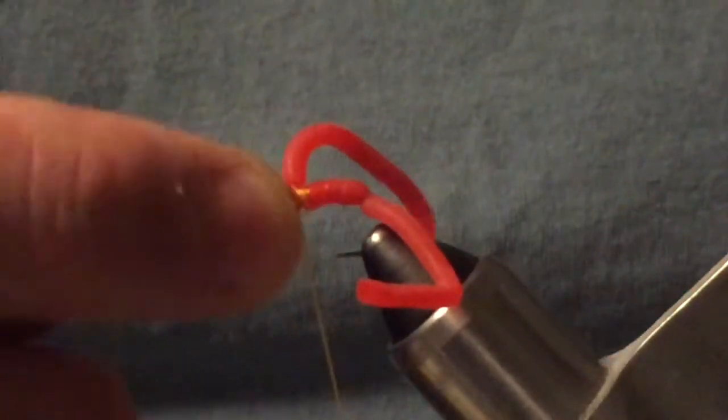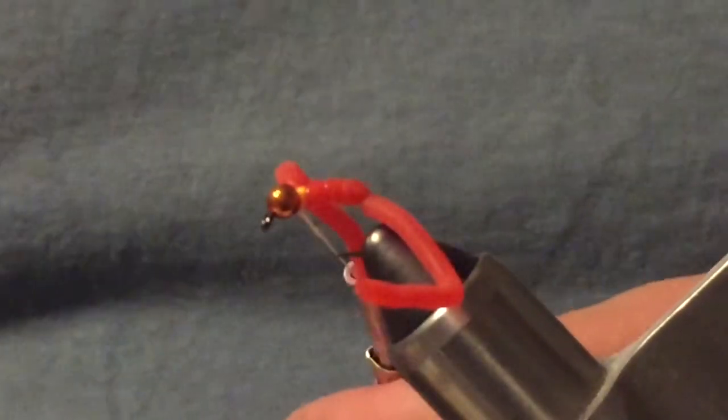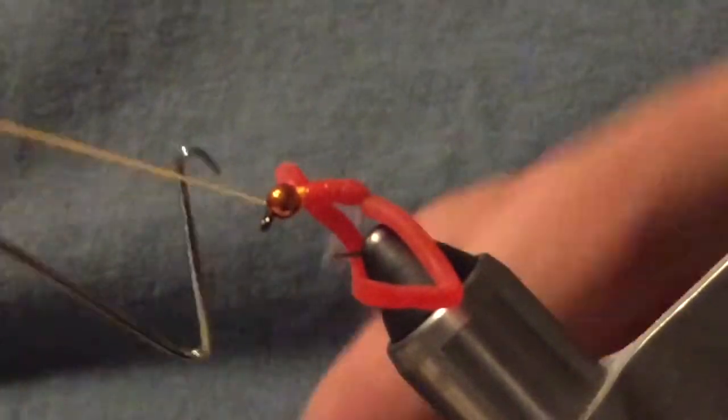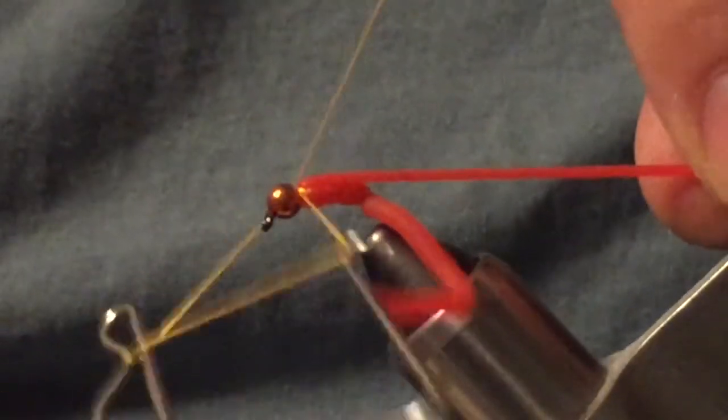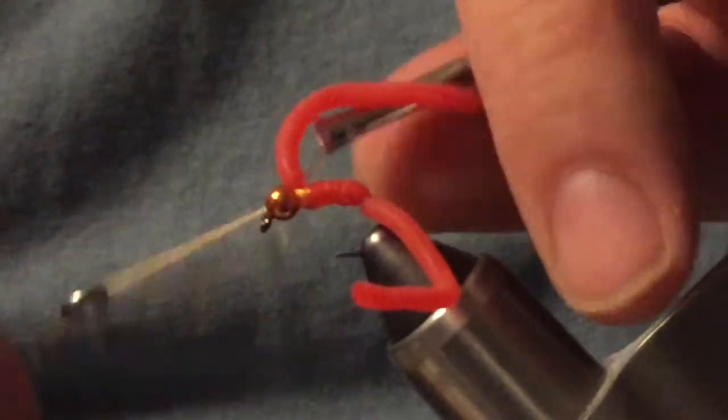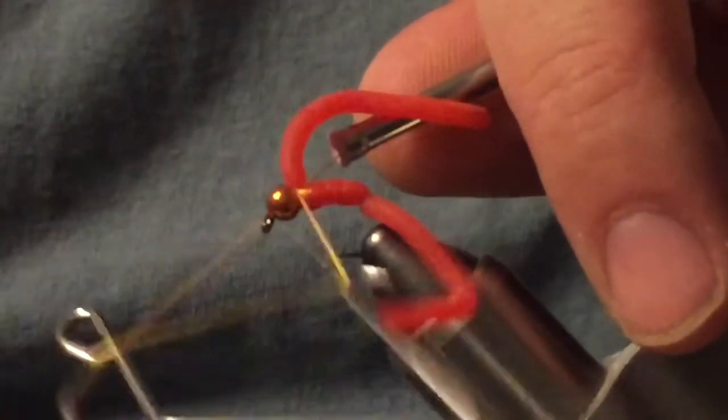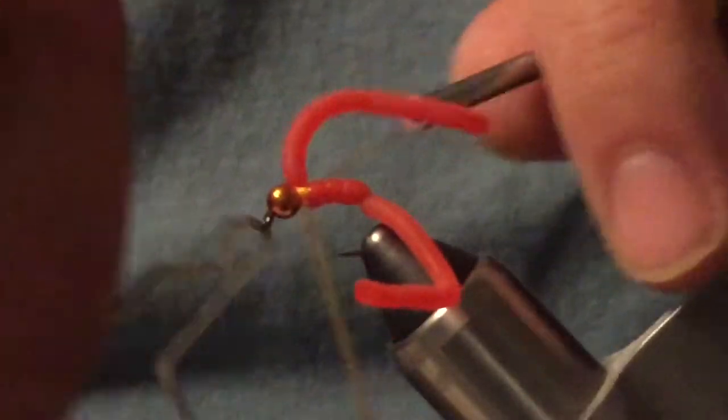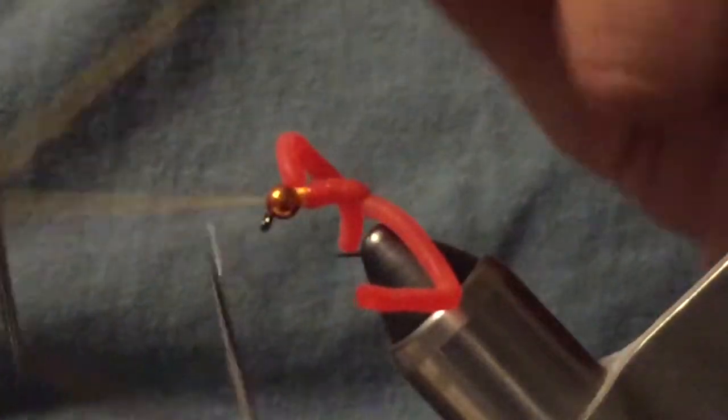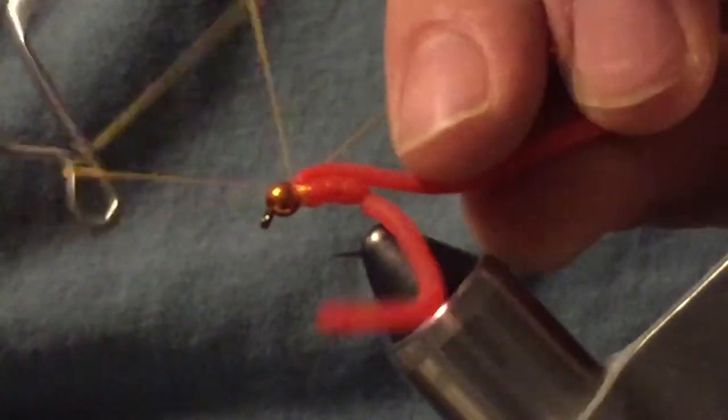Put a half hitch in here. Get your whip finish tool or if you want to do your hand whip finish, whatever you do. I'm more of a tool type guy. Two, three. Do a couple of these just to make sure it's good and secure, three or four or two.